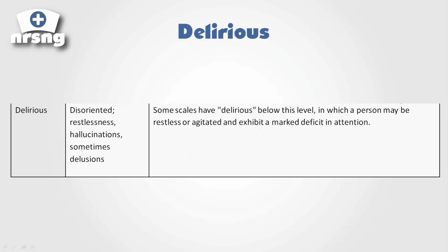From confused, we pass on to delirious. Delirious patients are going to be very disoriented, restless, and may have hallucinations and sometimes delusions. You might notice this in an Alzheimer's patient — they may become delirious at night, what we call sundowners. As a level of consciousness, delirious means this is where the person lives — they're restless, agitated, and unable to respond to you appropriately. They're awake, but their orientation is very askew.